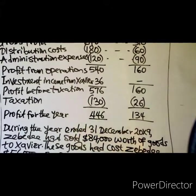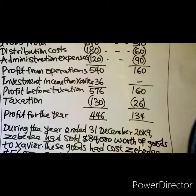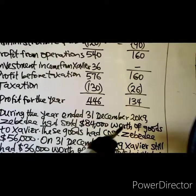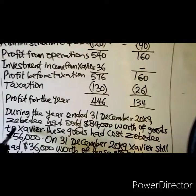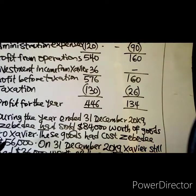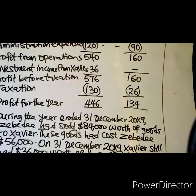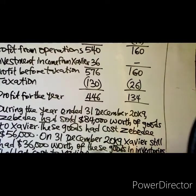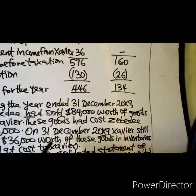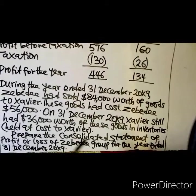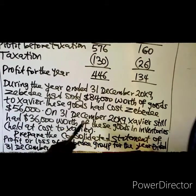During the year ended 31st December 20X9, ZBD had sold $84,000 worth of goods to Zavia. These goods had cost ZBD $56,000. On 31st December 20X9, Zavia still had $36,000 worth of these goods in inventory, at cost to Zavia.